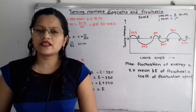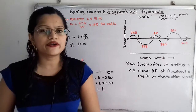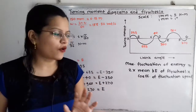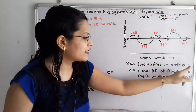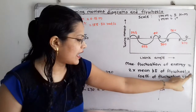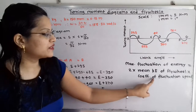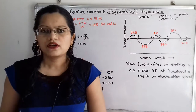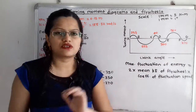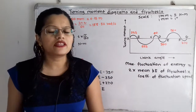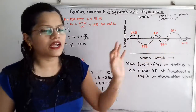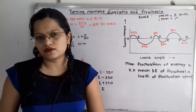From the question, we have to calculate the coefficient of fluctuation of speed. We will use the basic formula: maximum fluctuation of energy equals 2 times mean kinetic energy of the flywheel multiplied by the coefficient of fluctuation of speed. So we must first calculate the maximum fluctuation of energy, which can be derived from the diagram and the given area values.